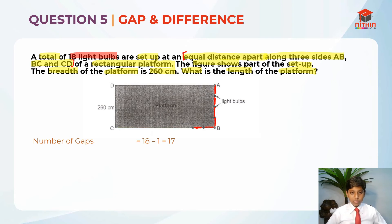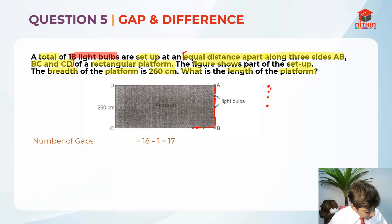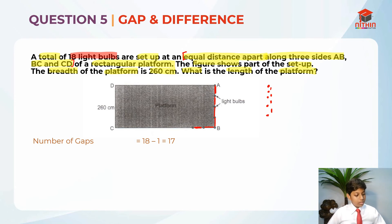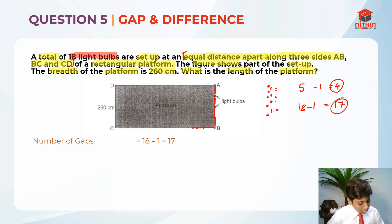Let me explain using the breadth. The breadth has 5 light bulbs, and all the distances between them are equal. To find the number of gaps, we take 5 light bulbs minus 1, which equals 4 gaps — you can count them: 1, 2, 3, 4. Similarly, for the full setup, 18 minus 1 equals 17 gaps. That is how we get 17 gaps for the three sides.